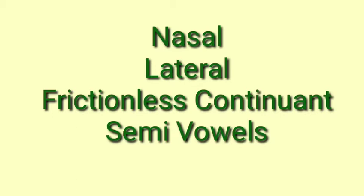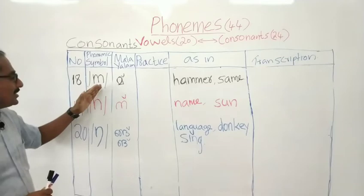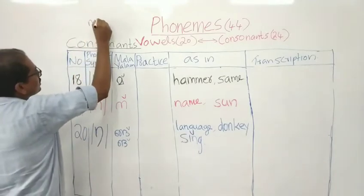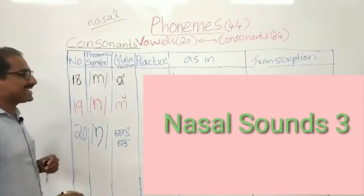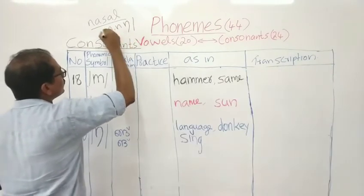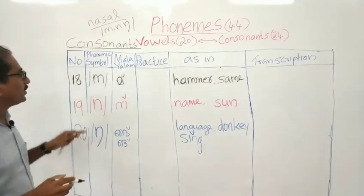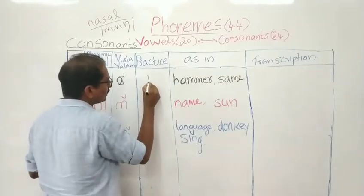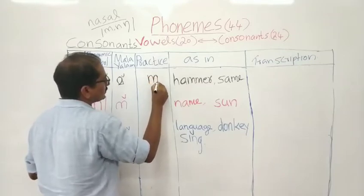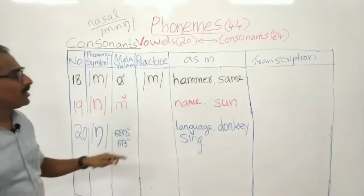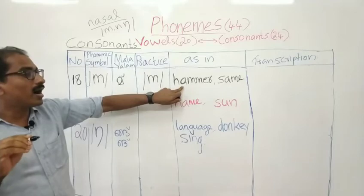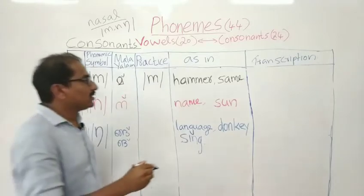We move on to the next set of consonants. These three sounds are together known as nasal sounds. The first nasal sound is 'mu'. The mu sound is written as small letter M. This is pronounced as 'mu' in Malayalam, as in 'hama'.